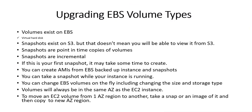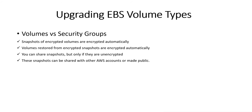Let's go to the theory part. EBS volumes exist on EBS as virtual hard disks. Snapshots exist on S3, but that doesn't mean you can view them from S3. Snapshots are point-in-time copies of volumes and are incremental. You can create AMIs from EBS-backed instances and snapshots. You can take a snapshot while the instance is running. EBS volumes will always be in the same availability zone as the EC2 instance. To move a volume to another AZ or region, take a snapshot or image and copy it there.